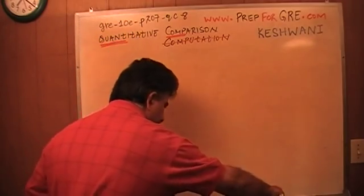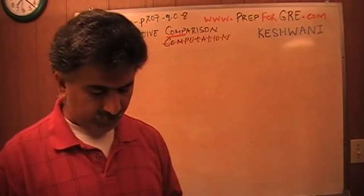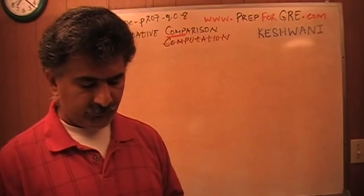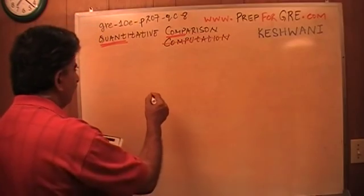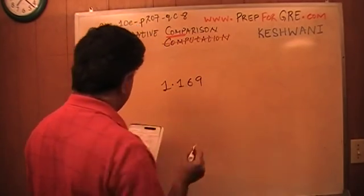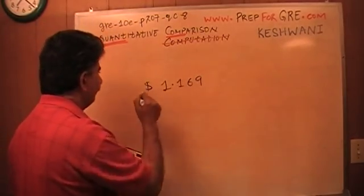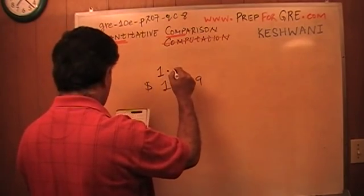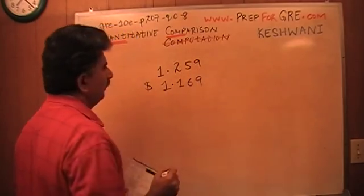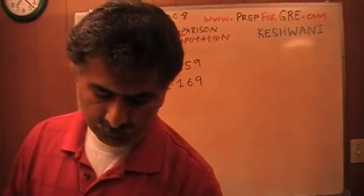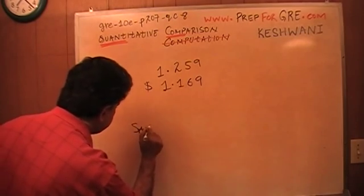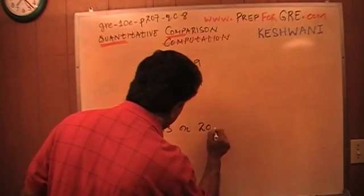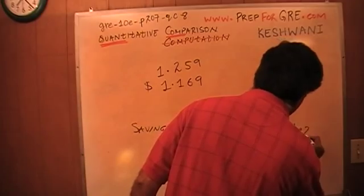Let's take a look at it. I do not have the luxury of putting the entire problem on the blackboard, so you have to have the book in front of you — turn to page number 207 and read it with me. In the first column it says: total savings that one would have on 20 gallons of gasoline purchased at $1.169 as opposed to paying a regular price of $1.259. How much are you going to save on 20 gallons versus $1.80?